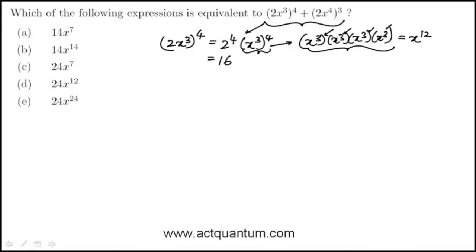So the rule when you have what's called power of power is that you multiply. So this is x to the power of 3 times 4, not x to the 7. Common mistake in terms of adding those. So that expression is 16 times x to the 12.